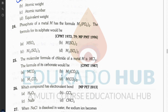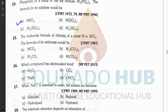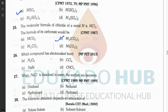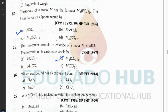Questions twenty-four and twenty-five involve the same type of formula-making. For question twenty-four (phosphate to sulfate), the answer is A. For question twenty-five, if the chloride of metal M is MCl₃, the metal has valency +3. The carbonate ion has valency −2. Crossing gives M₂(CO₃)₃, answer B. Figure out the valencies of carbonate and sulfate ions to solve these yourself.